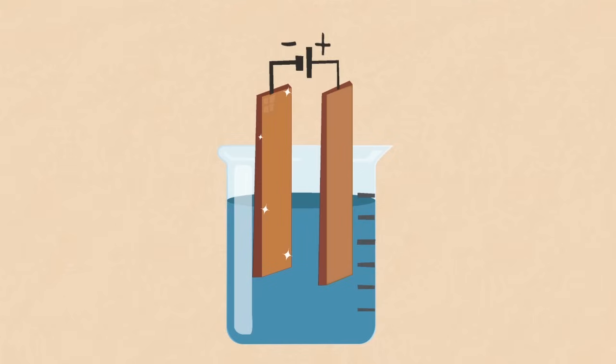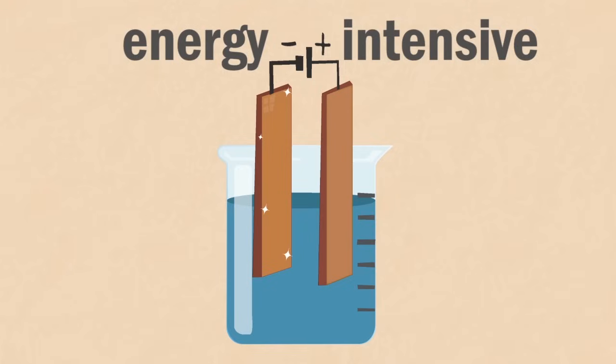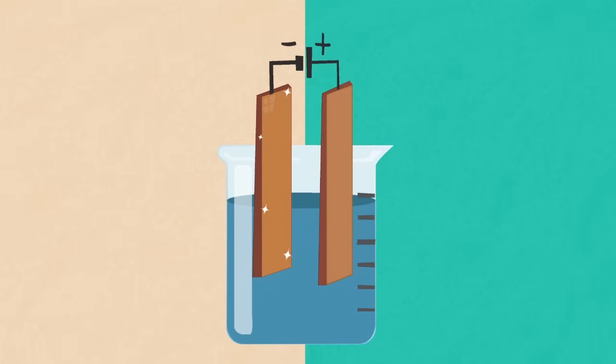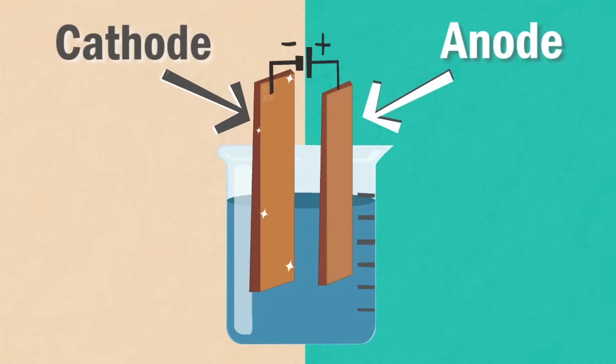There are two parts: the cathode and the anode. The pure copper sheet is placed at the cathode and the impure copper sheet is placed at the anode.